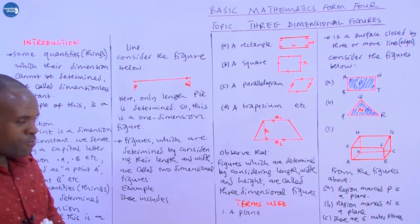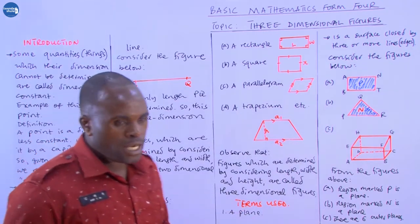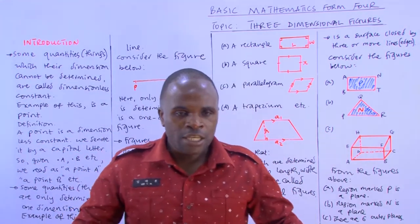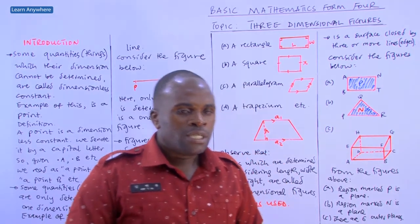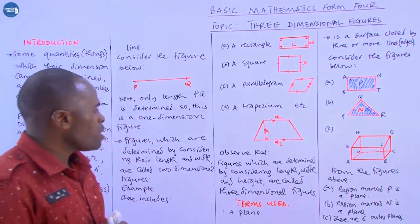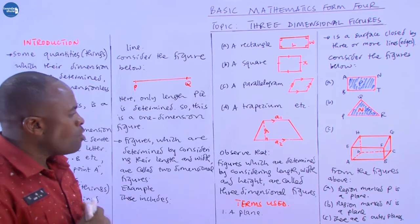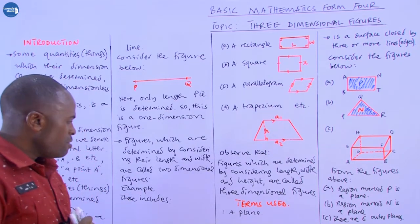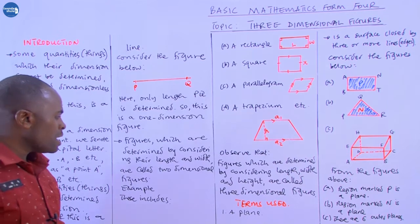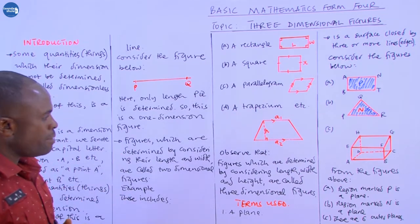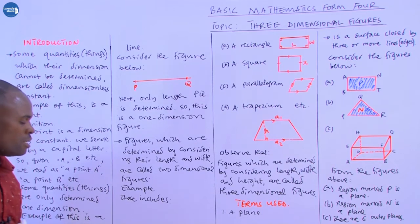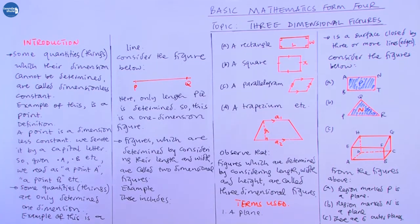Figures like a sphere or a right circular cone take up space, and you consider their volumes. All such figures are categorized as three-dimensional figures. So we also need to know the terms used in this topic.